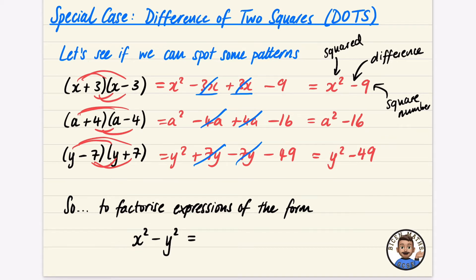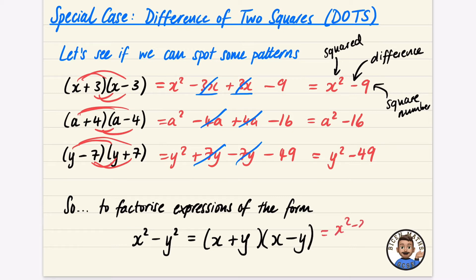This means we can factorize expressions in this form. Whatever the first term was appears in both brackets — for x squared it gives an x in each bracket. The important part: since 9 gives 3 and minus 3, and the square root of 9 is 3, the general rule is x squared minus y squared equals x plus y times x minus y. Expanding confirms the middle terms cancel.